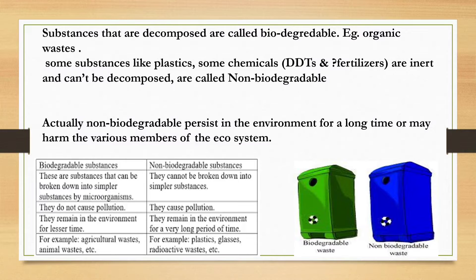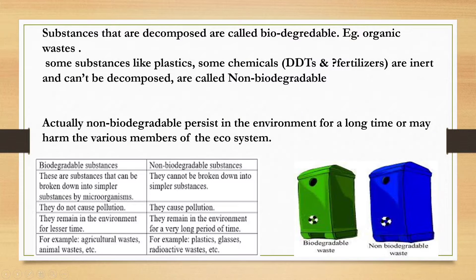Non-biodegradable substances remain persistent in the environment and they damage the ecosystem. There are two types of dustbin — green and blue. Green is for biodegradable waste and blue is for non-biodegradable waste. Biodegradable waste does not harm the environment and does not cause pollution, but plastic, glasses, and radioactive waste materials cause pollution.